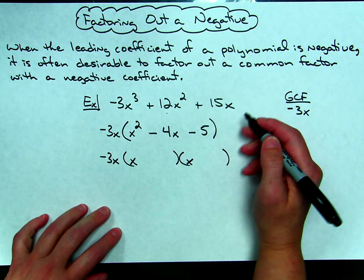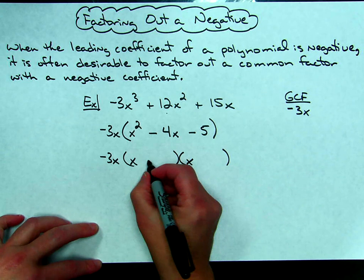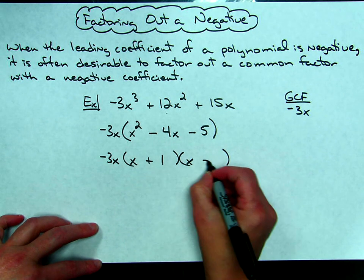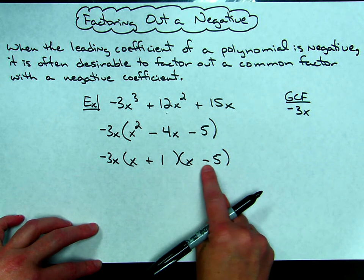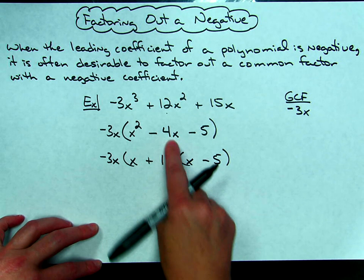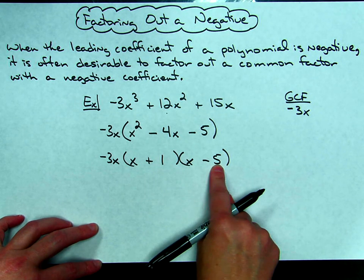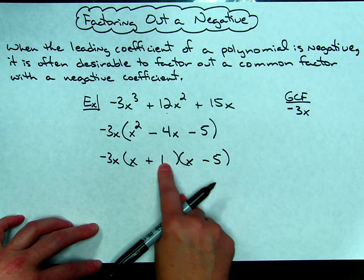That turns out to be a positive 1 and negative 5, so plus 1 and minus 5. 1 times negative 5 gives me that negative 5. Checking that middle term, I get a negative 5x plus a 1x will give me the negative 4x right there.